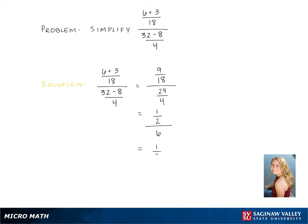Then we use our division rule and multiply the numerator by the reciprocal of the denominator, which is 1 half times 1 sixth. Multiplying across gives us 1 twelfth, and that is our final answer.